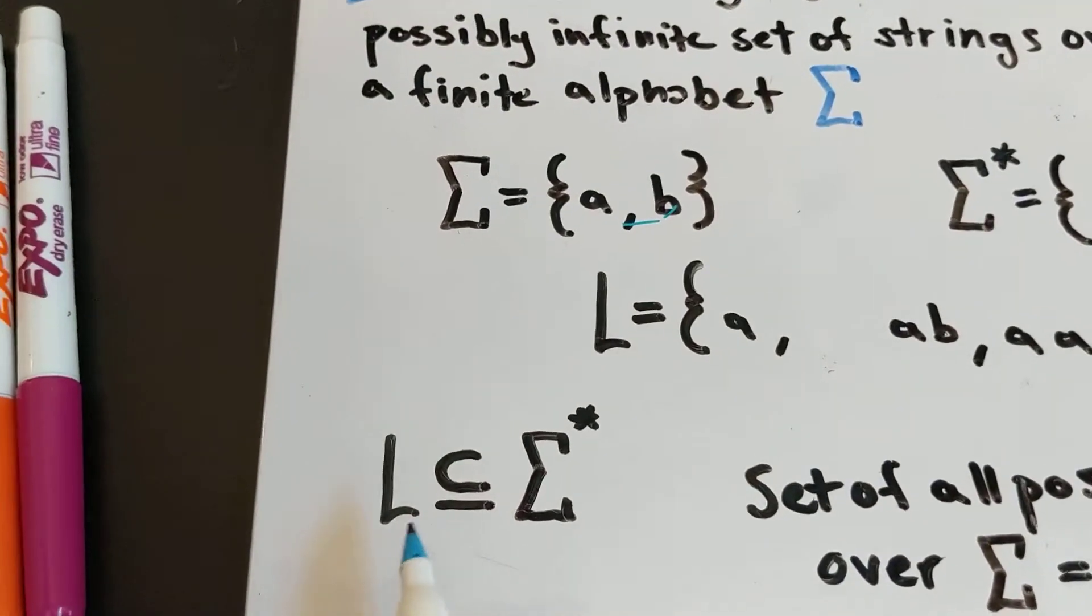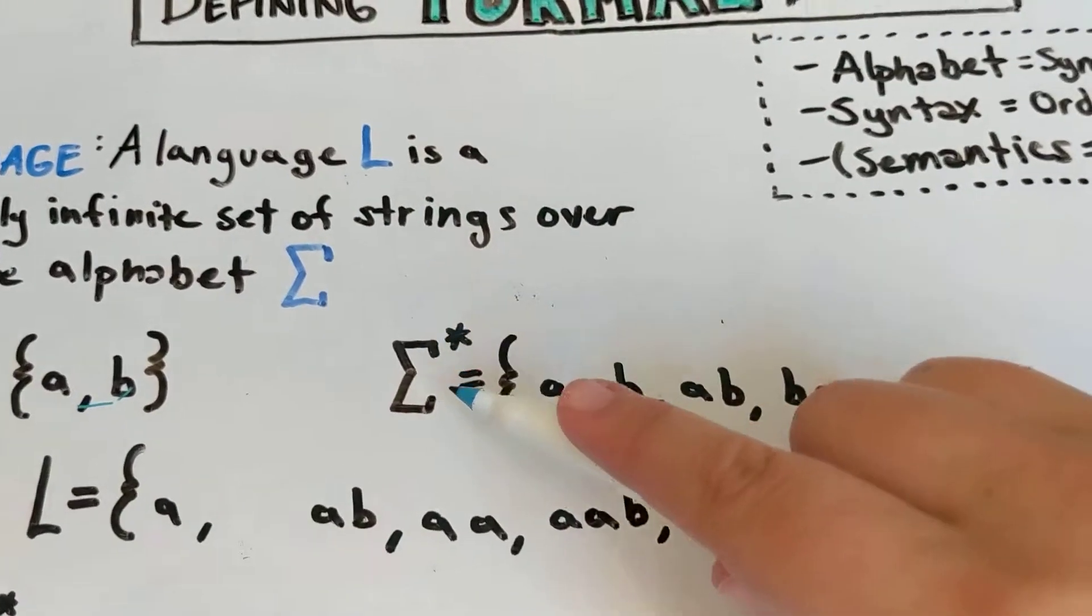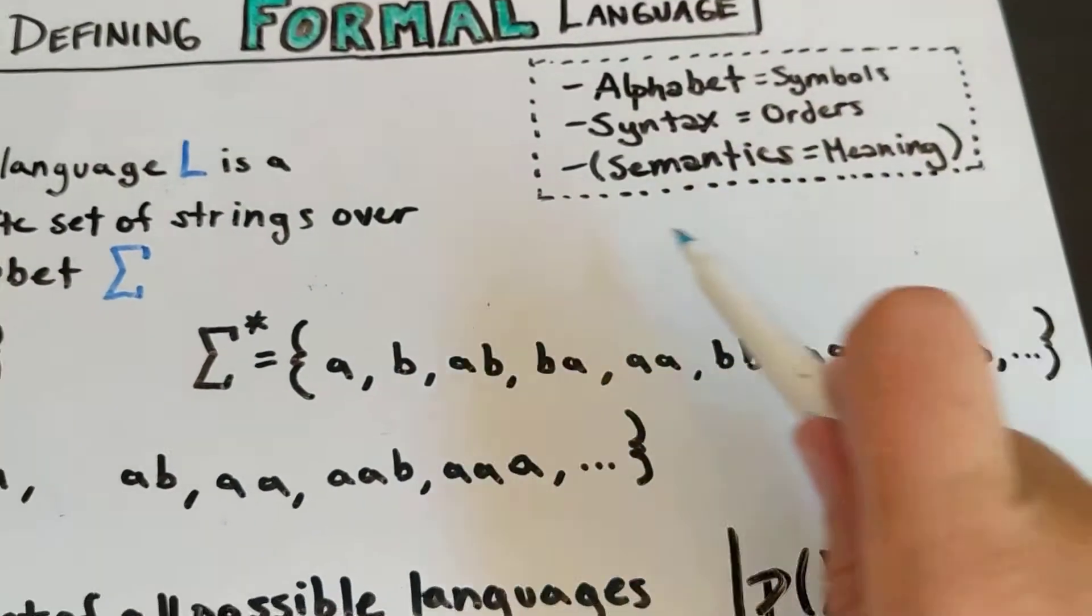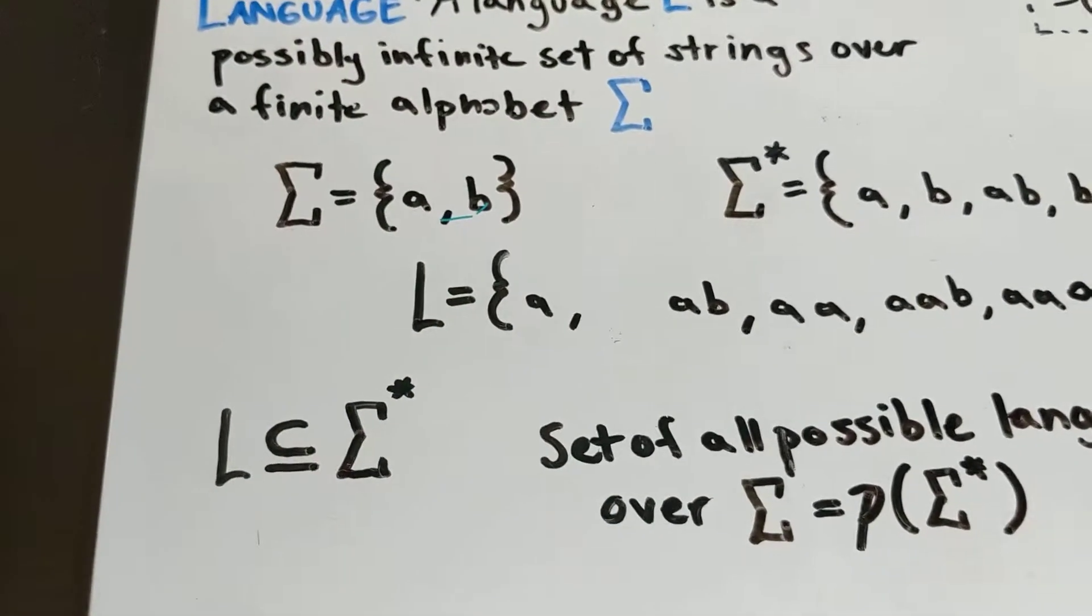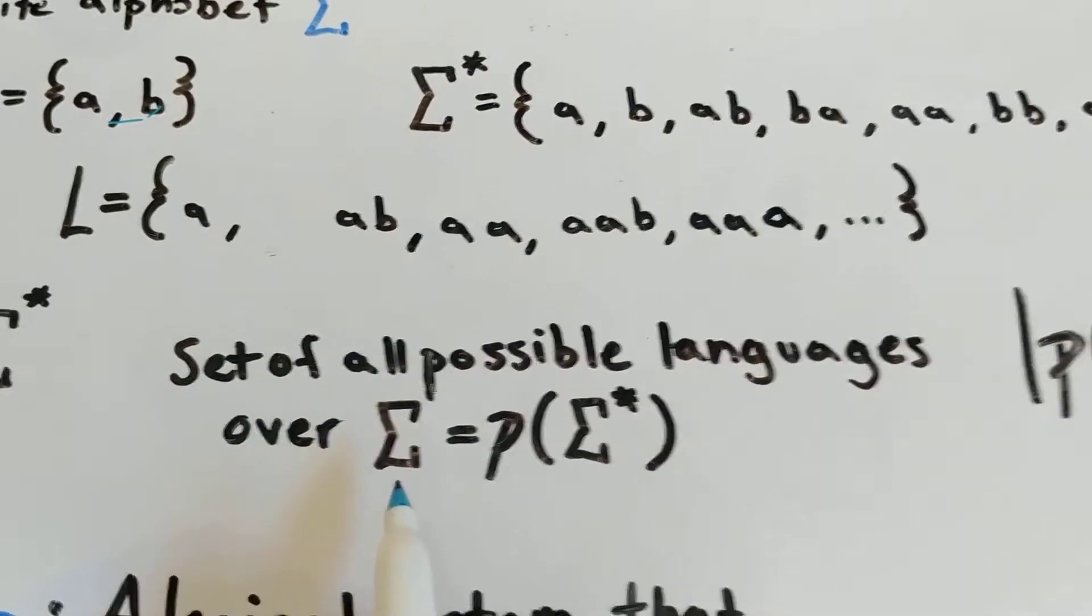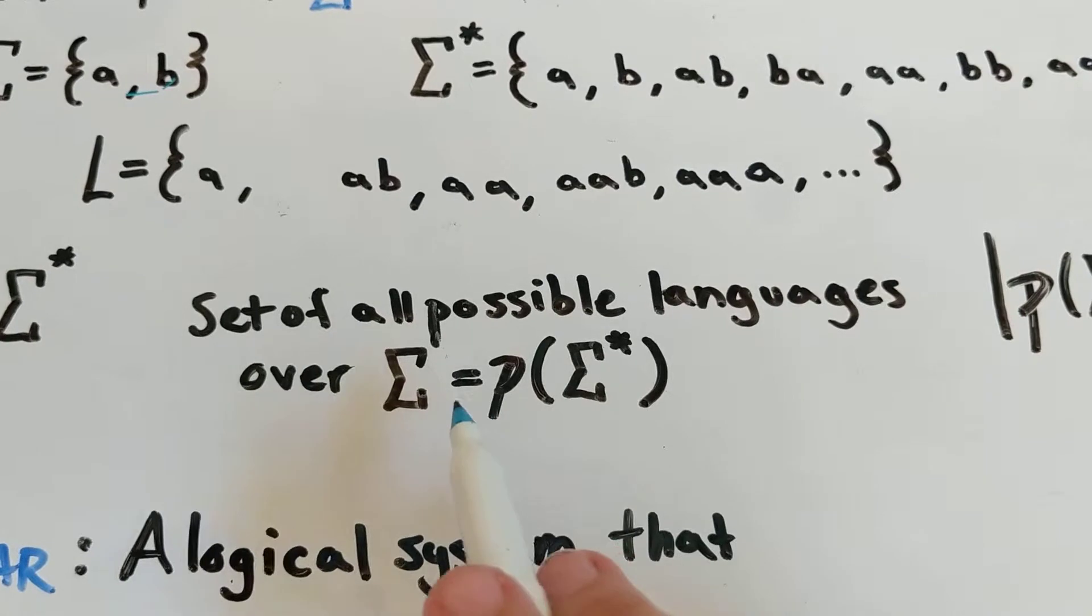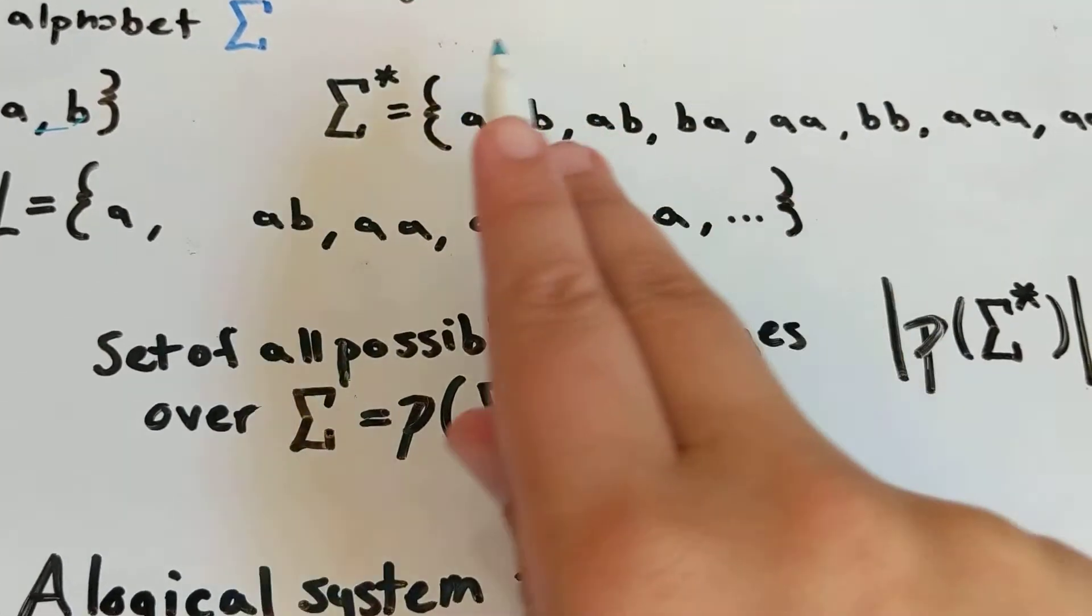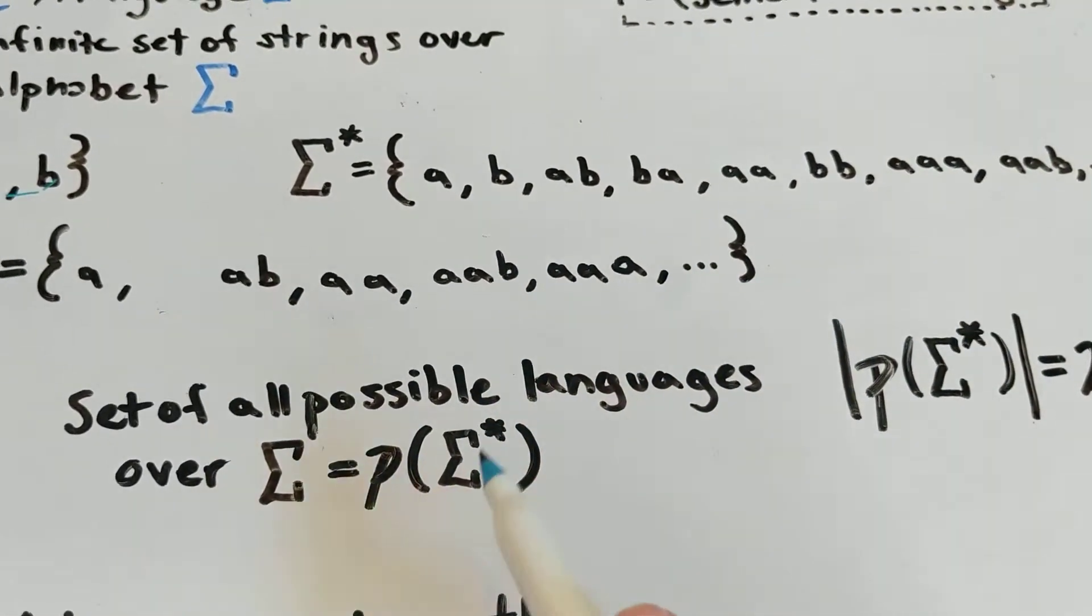But what is going to be the case, always, is that every language will be a subset of sigma star. So of your list of every possible string using that alphabet, your language will be a subset of that. Which means that if you were to create a set of all the possible languages over a given alphabet sigma, that that set would be the power set of this. It's the set of every possible language, every possible subset of strings from this set.